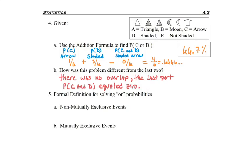So let's just go ahead now and summarize the formal definition for solving OR problems. Selecting one item, super important, it's only one, and we're looking for more than one attribute for that item.